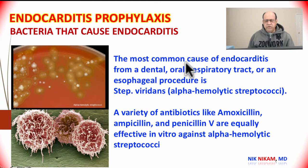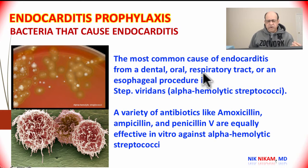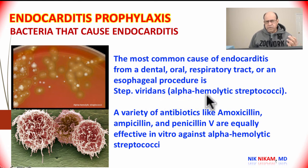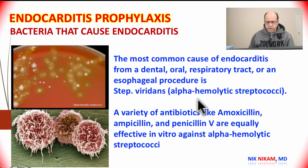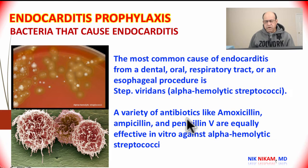The most common cause of endocarditis from a dental, oral, respiratory, or esophageal procedure is Strep viridans, which is of an alpha-hemolytic type. A variety of antibiotics like amoxicillin, ampicillin, and penicillin V are equally effective against alpha-hemolytic streptococcus.